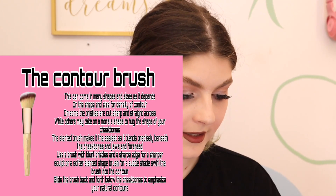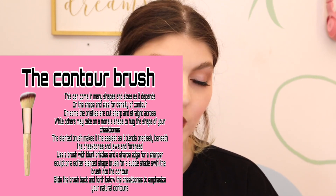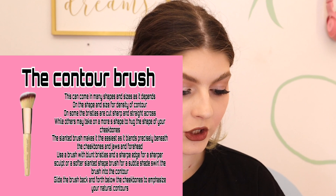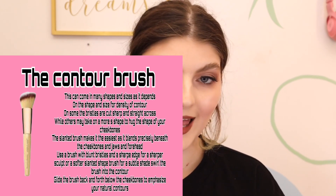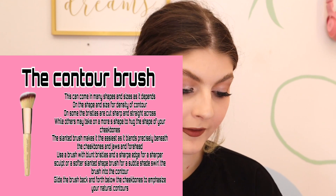The contour brush can come in many shapes and sizes depending on the density of the contour you want. Some bristles are cut sharp and straight across while others may take a more S-shape to hug your cheekbones. The slanted brush is easiest as it blends precisely beneath the cheekbone, jaw, and forehead. Use blunt bristles with a sharp edge for a sharper sculpt, or a softer slanted brush for a subtle sculpt. Swirl the brush onto the contour and glide it back and forth below the cheekbones to emphasize your natural contours.